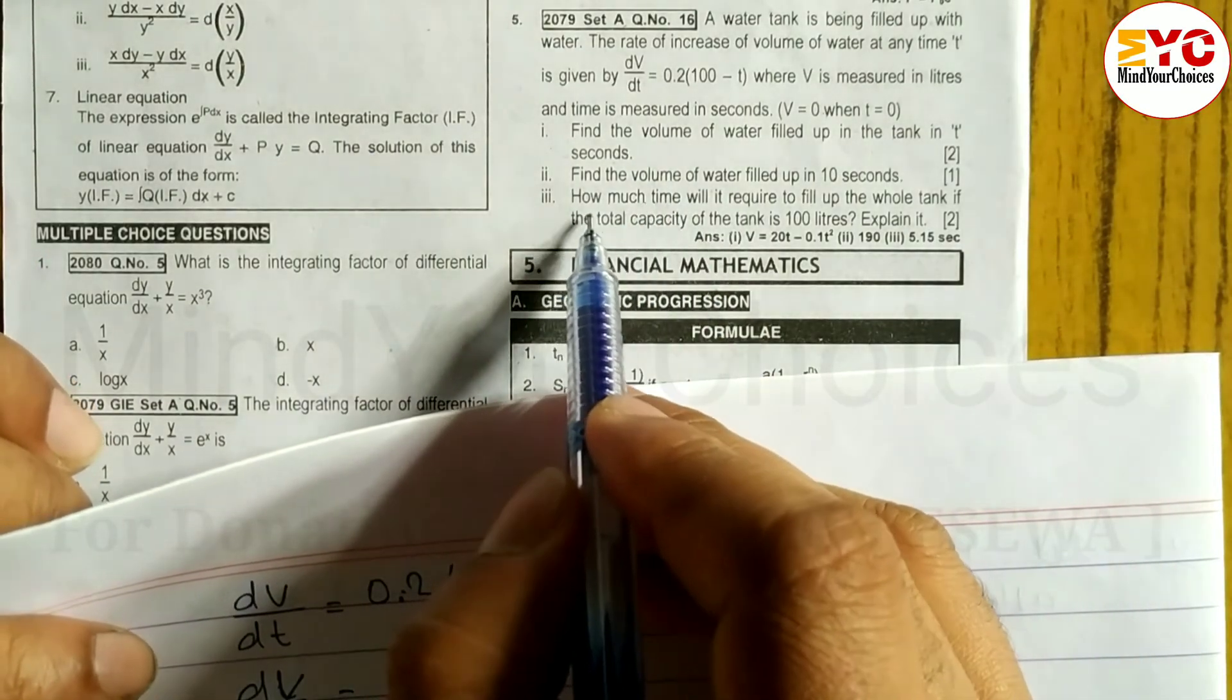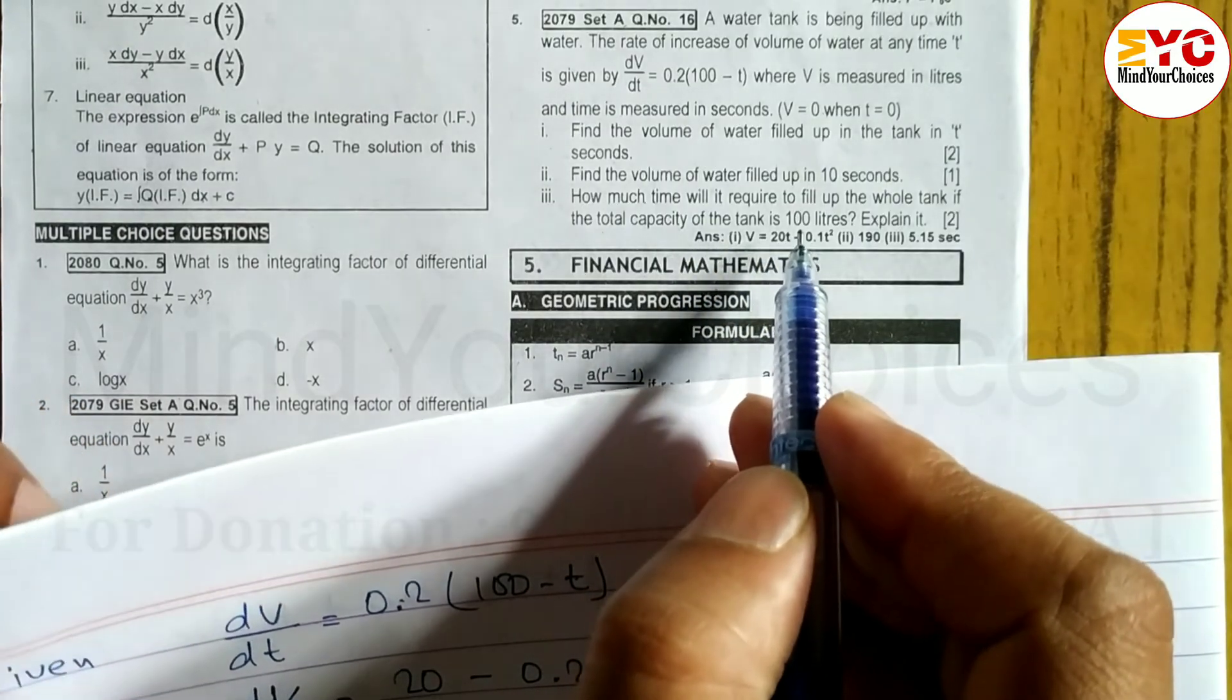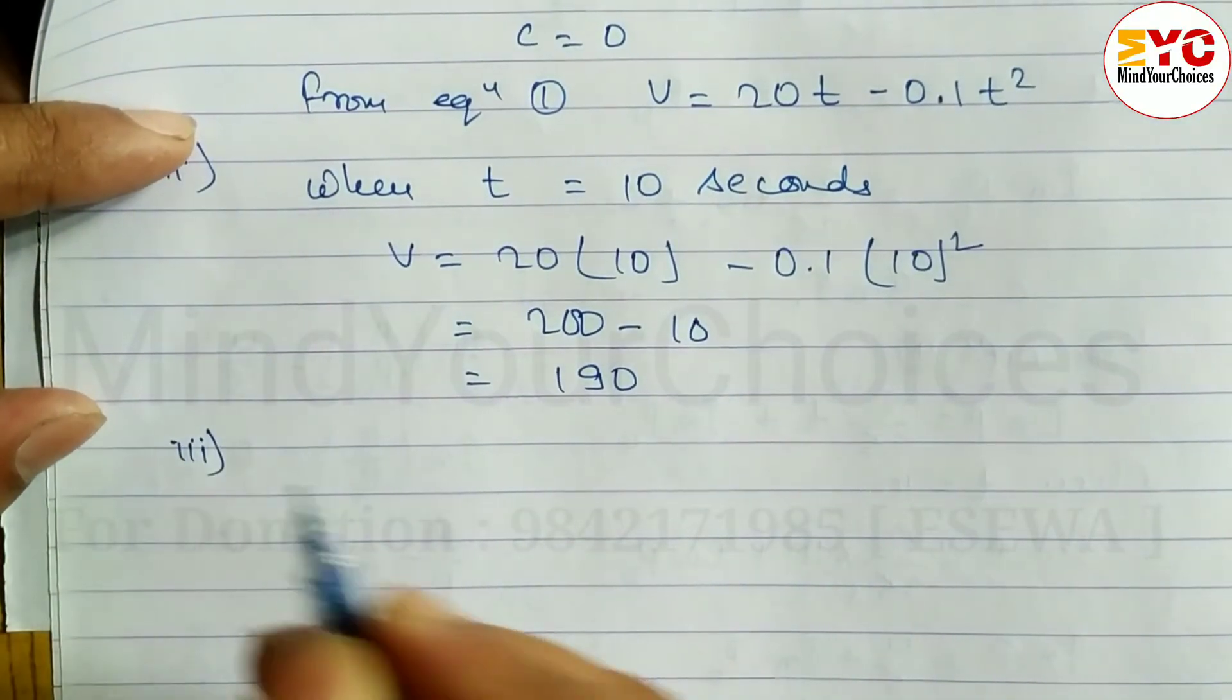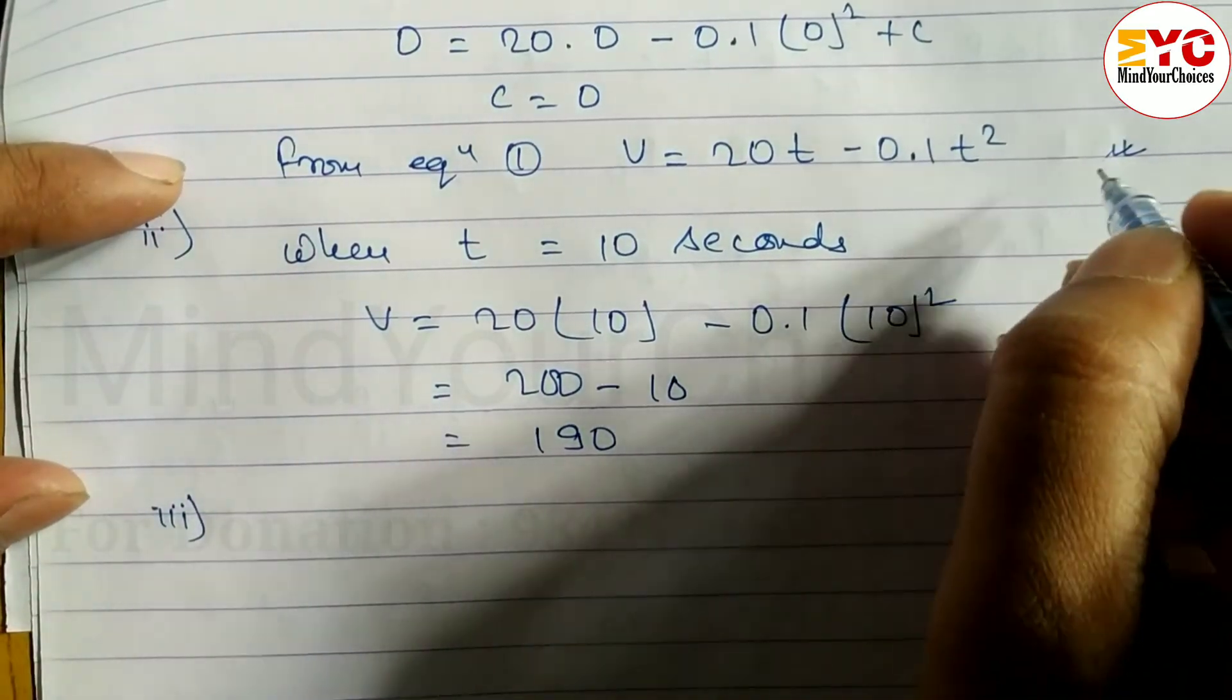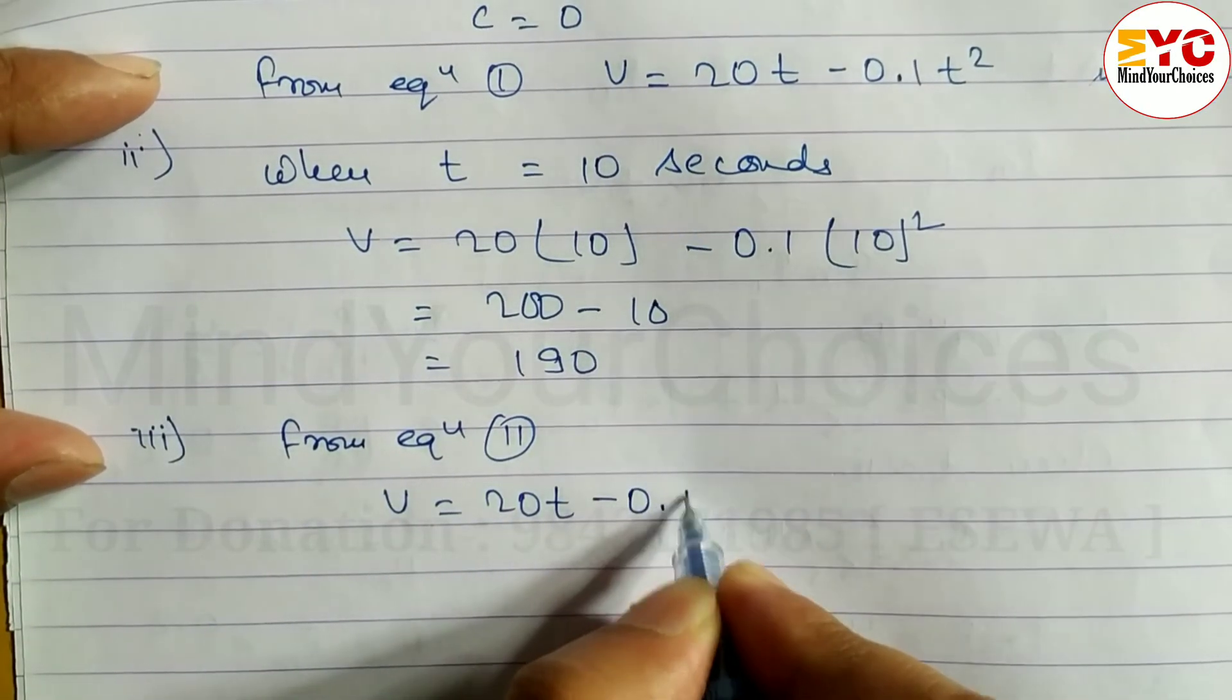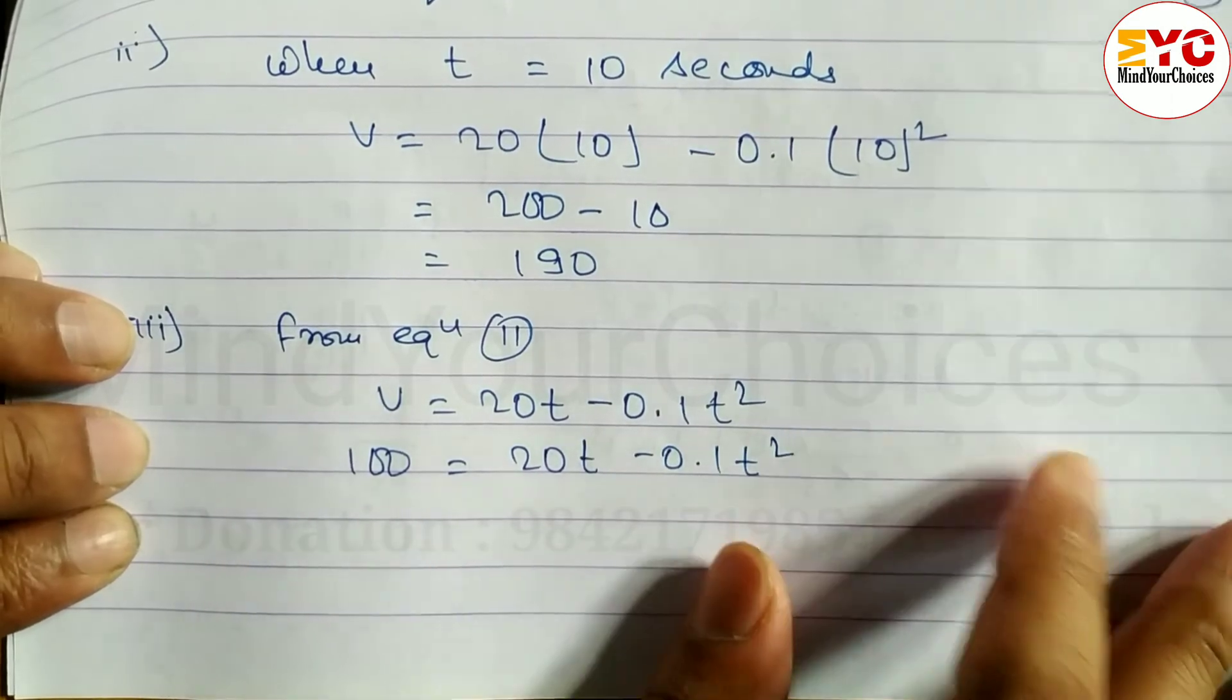Next question 3: How much time will be required for the whole tank of total capacity 100 liters? We're talking about capacity, which is volume, and we need to find time. So in number 3 we have to find out time. We have this equation. From equation 2, V equals 20T minus 0.1T squared. In place of V we put the capacity, which is 100.